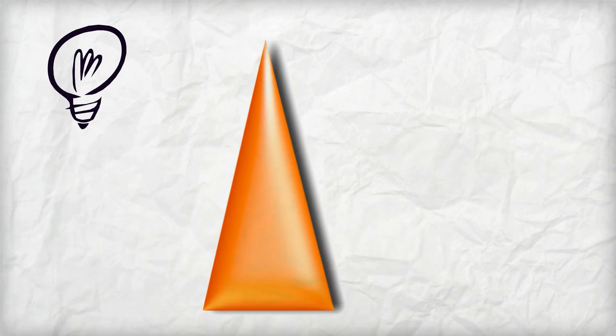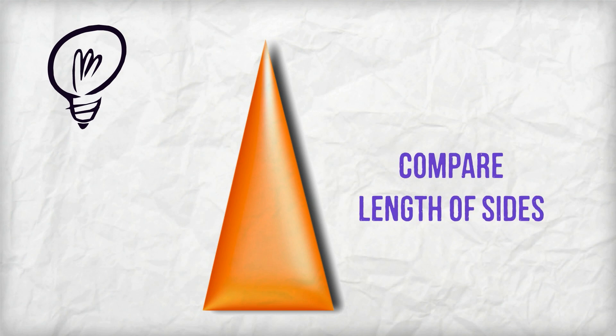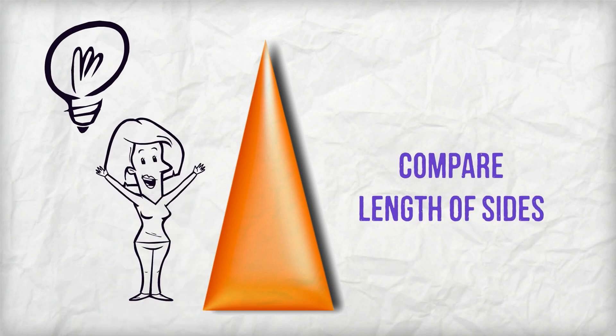One way we can sort a triangle is by comparing the length of its sides. I'm going to show you how to do this so you can sort triangles too.